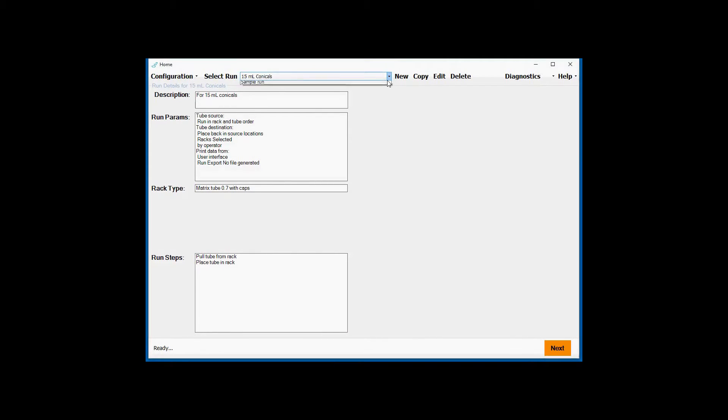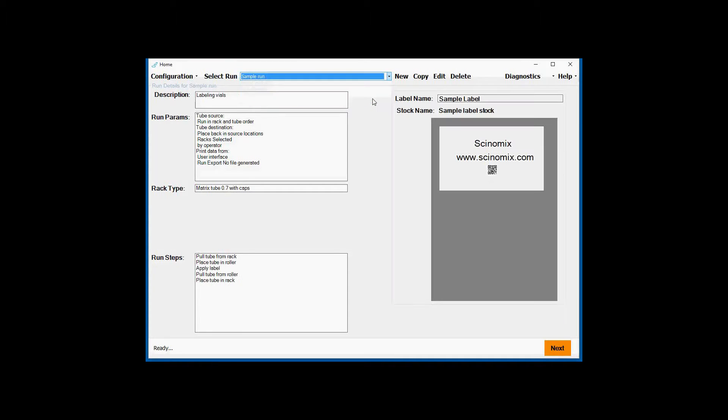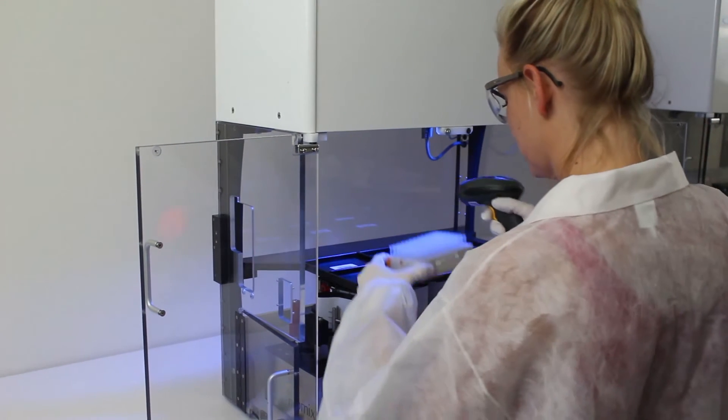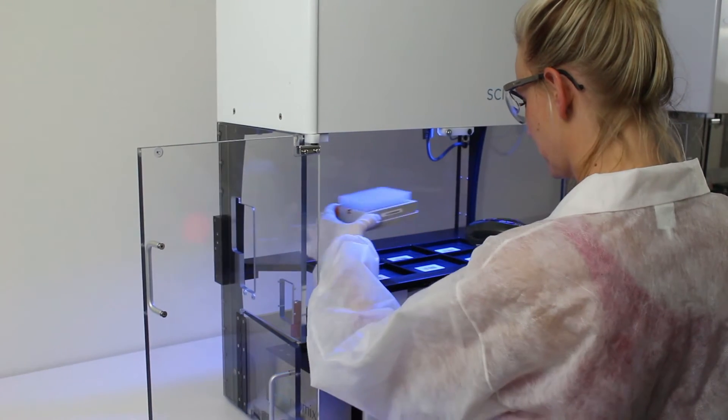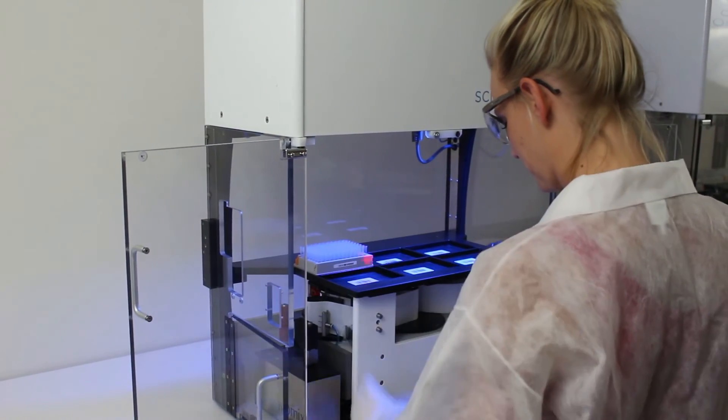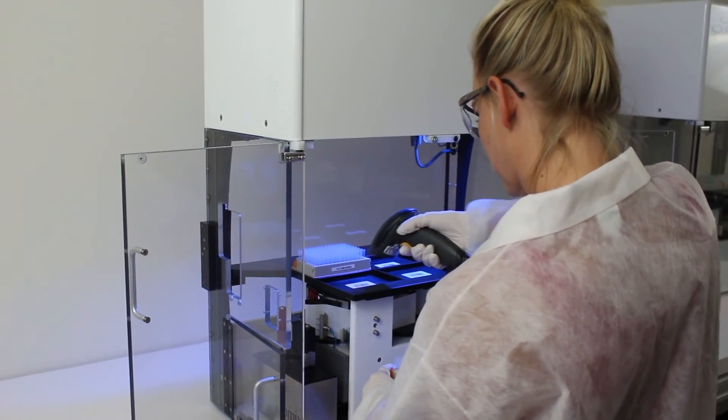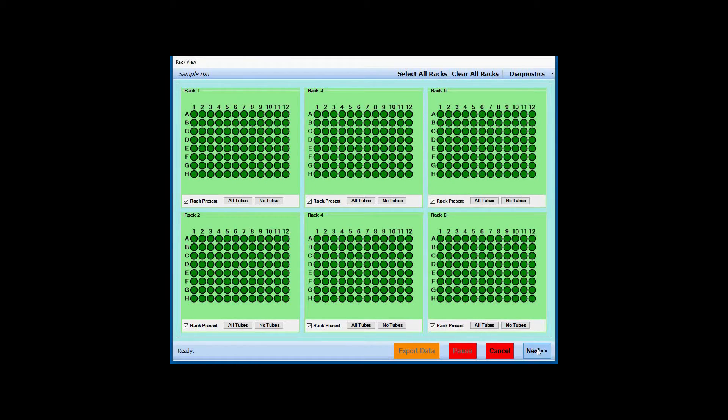After configurations are set up, the run type is selected from the drop-down menu on the screen. Racks of vials are loaded onto the work deck positions. Racks of vials can also be scanned as they are loaded and data retrieved from a LIMS if required. The run is then started.